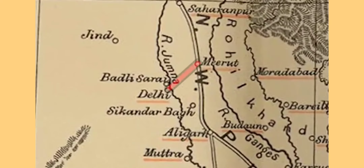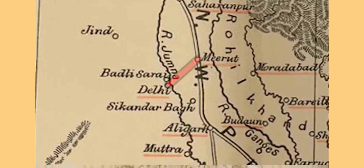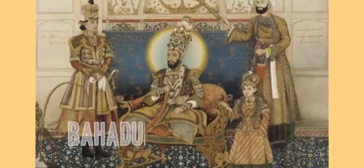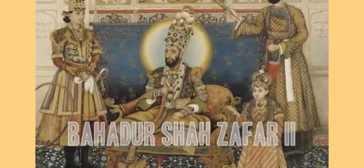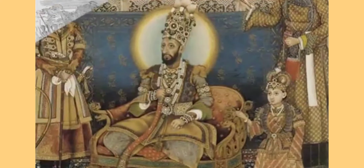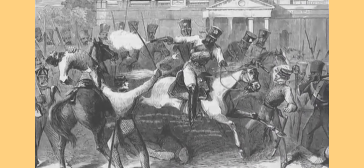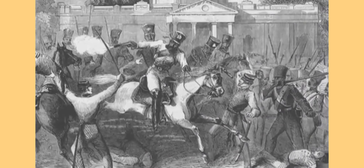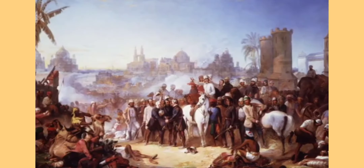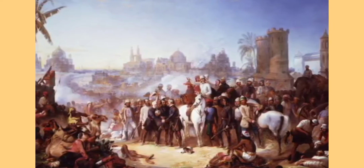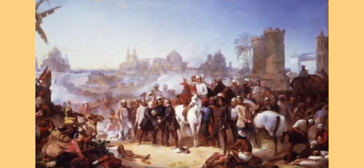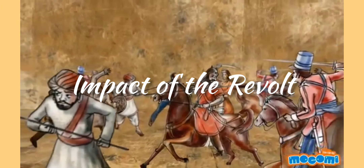Some feel that the appropriate name for the events of 1857 is the First War of Indian Independence, as it was the first widespread uprising against British rule. Other scholars feel this is not entirely accurate because independence was not the goal of all the rebels. India was not yet a nation in the modern sense of the word, and the loyalty of the sepoys lay with the provincial kingdoms that they belonged to.